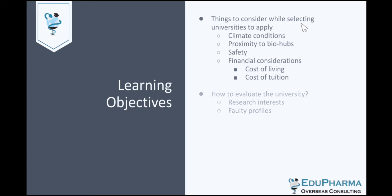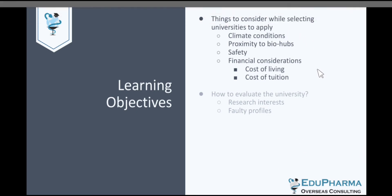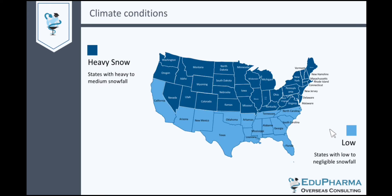So let's first look into the things that we need to consider. One of the important things is the climate conditions. You may have heard about the freezing conditions and the snowfall that happens in the US, and if you are particularly affected by freezing or very low temperatures, it would be important to select universities in states where there is not a lot of snowfall. In this particular map you can see the different states of the United States with heavy snow as well as states with low snowfall.